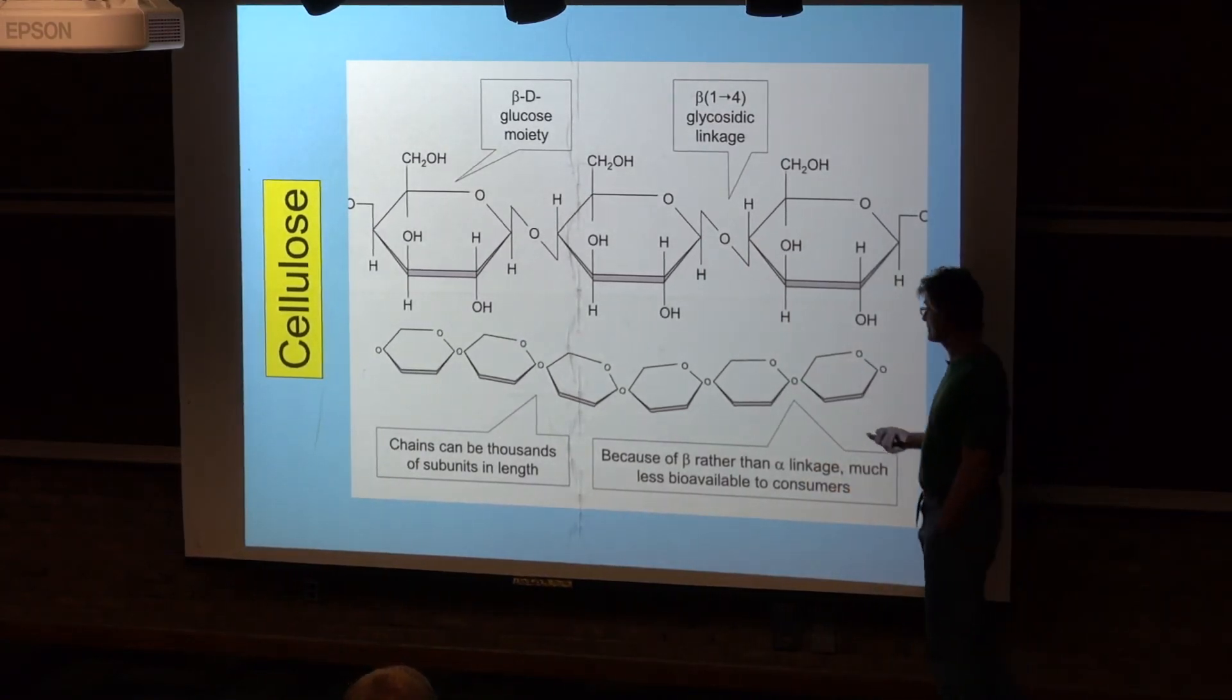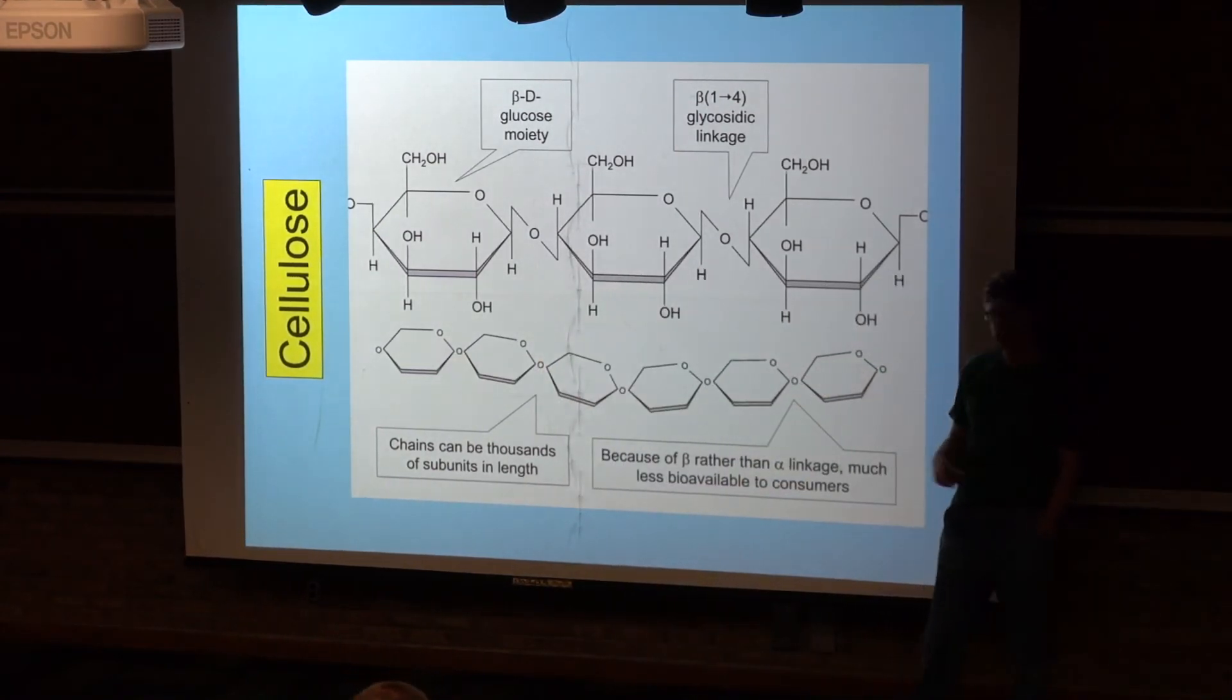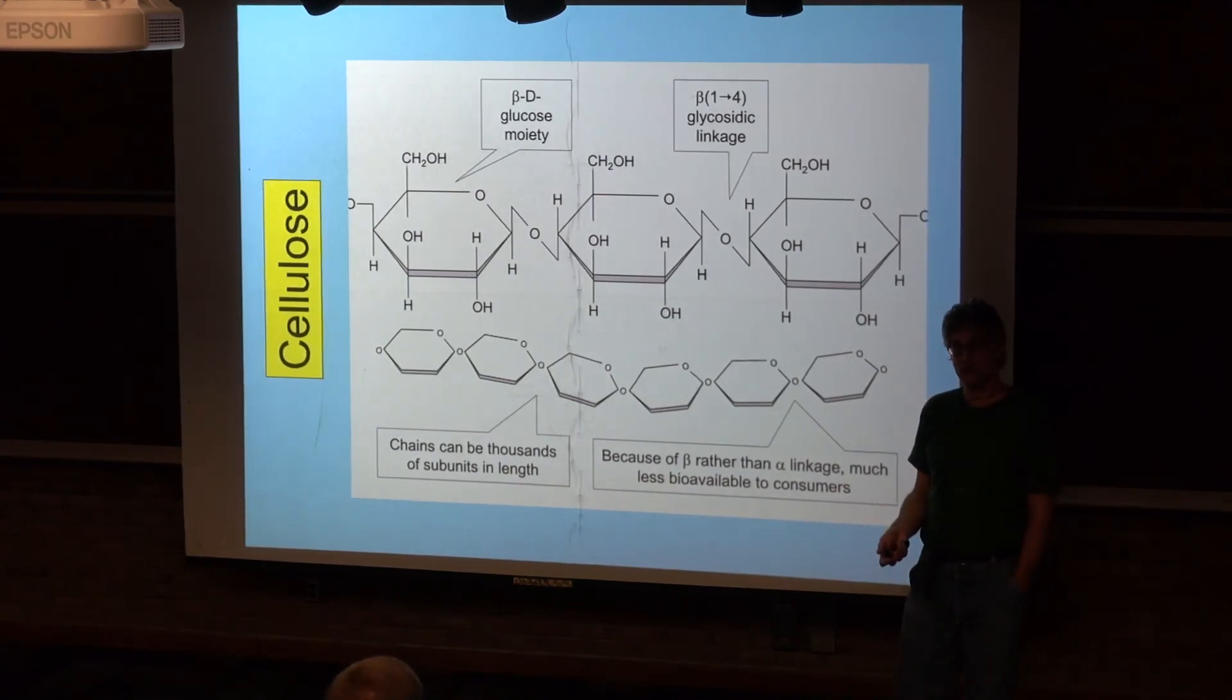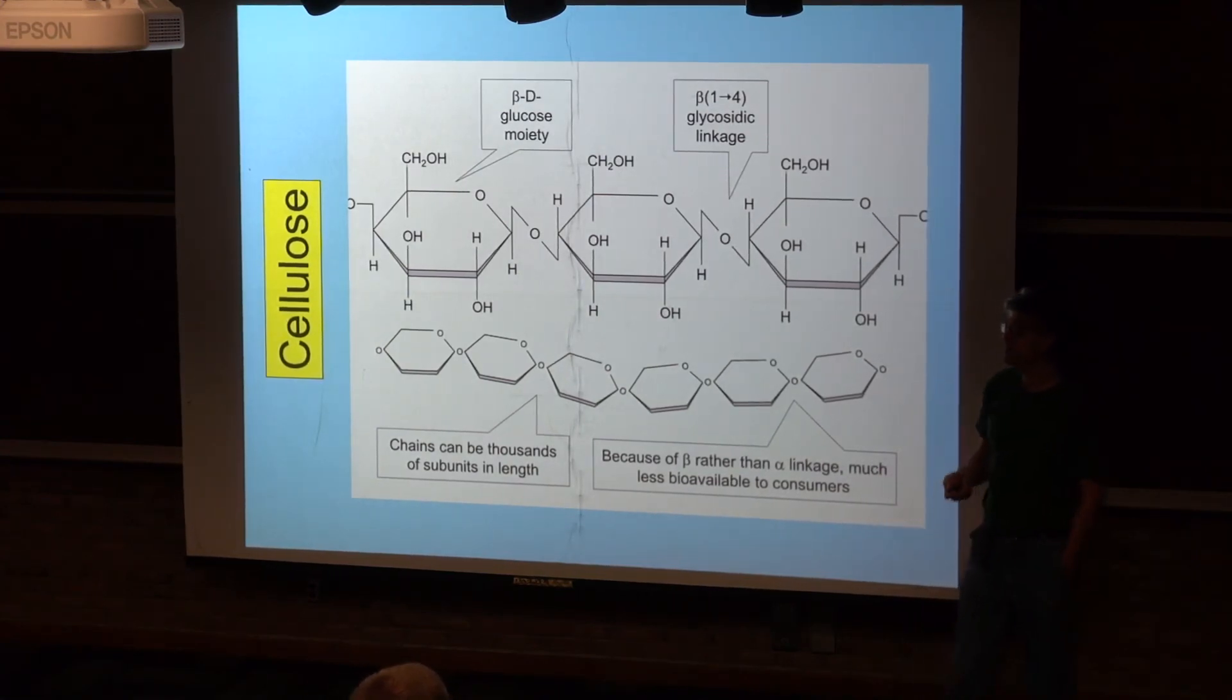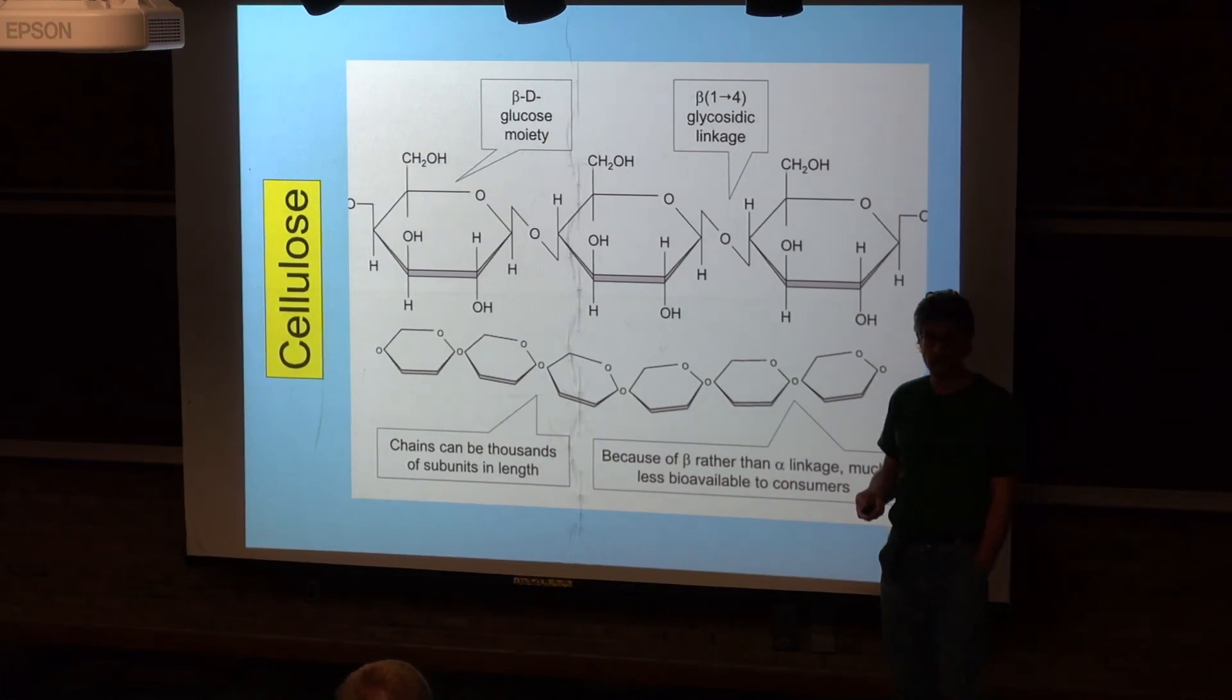So cellulose is a linear polymer of glucose, and this is again a representation of what it looks like. As I've represented here, it looks no different from the amylose molecule, but rather than being a glucose storage molecule, cellulose is a structural molecule.